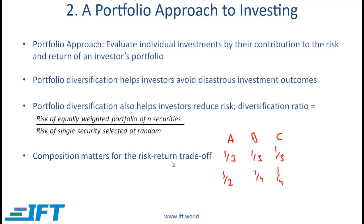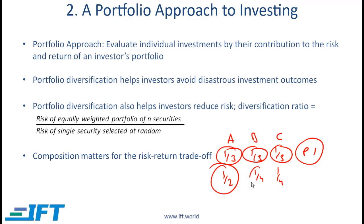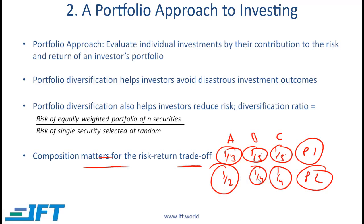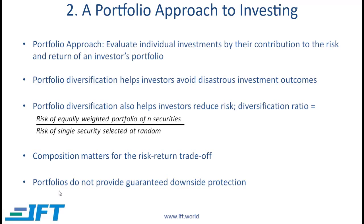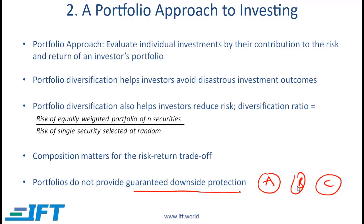Composition matters for the risk-return trade-off. For example, one portfolio could be equally weighted with one-third of money in each of stocks A, B, and C, while another portfolio puts 50% in A and 25% each in B and C. The risk-return trade-off depends on the relative weight of each stock in the portfolio. Finally, portfolios do not provide guaranteed downside protection. There are situations, especially during a financial crisis, where all investments in a portfolio might do badly.